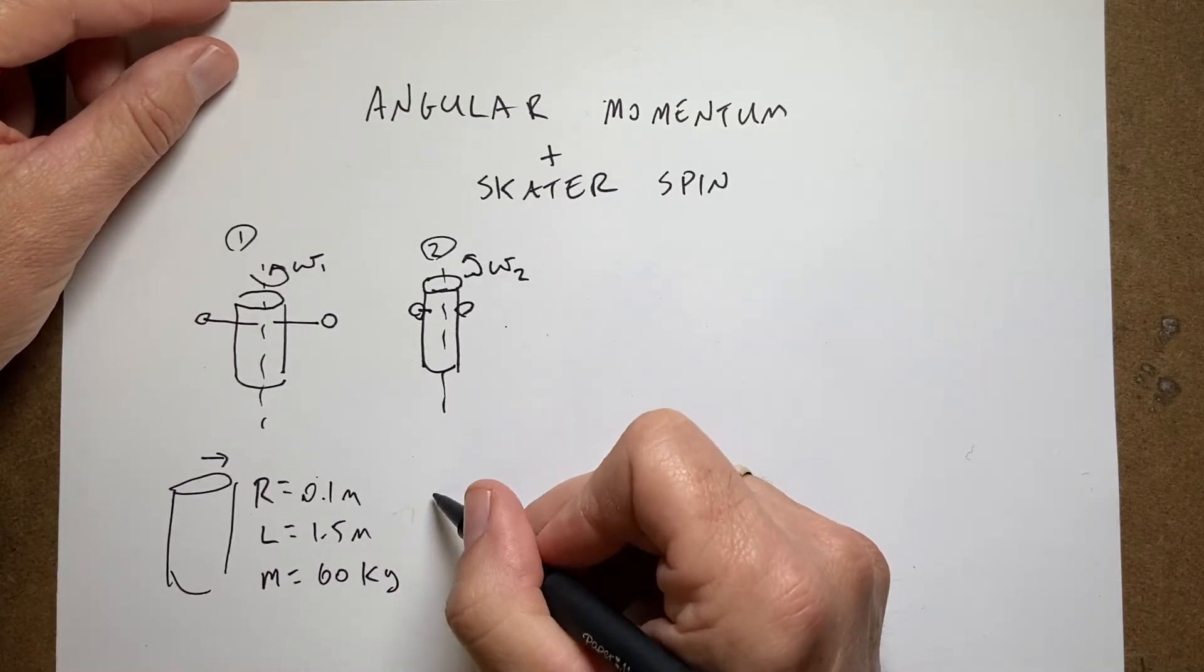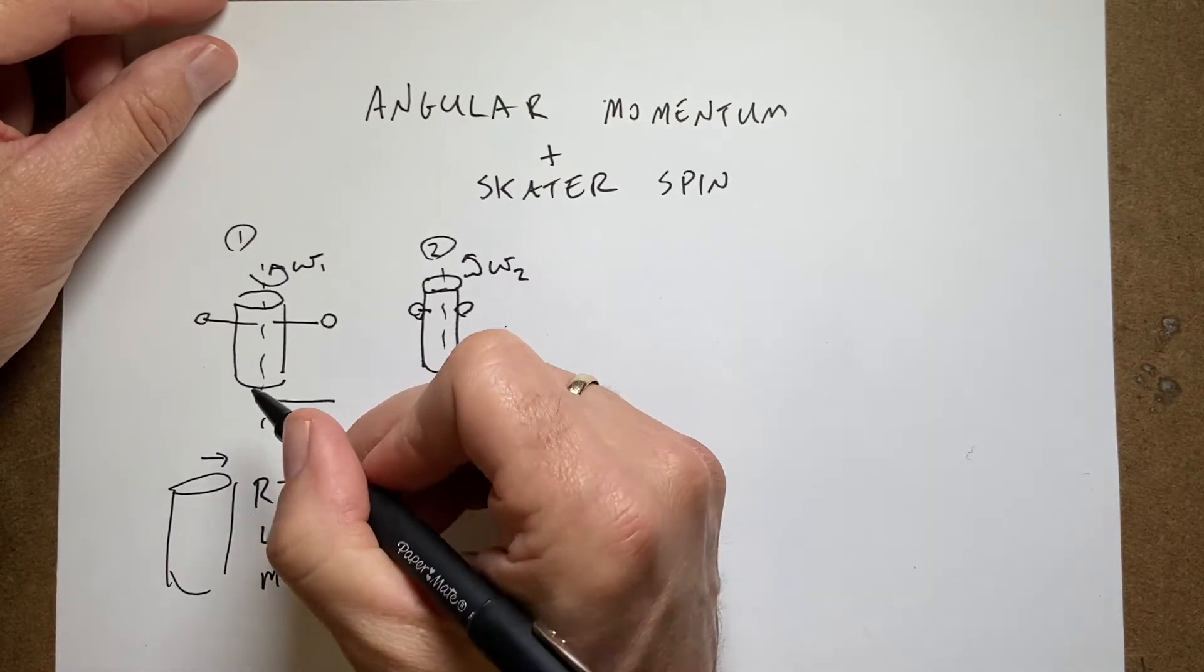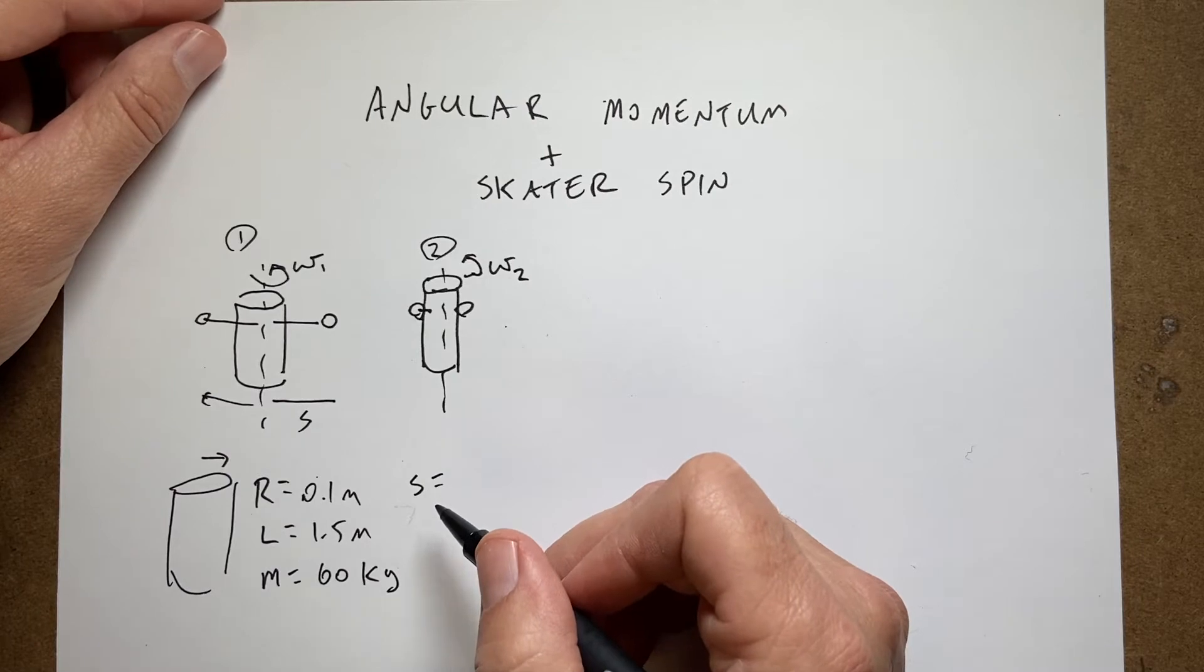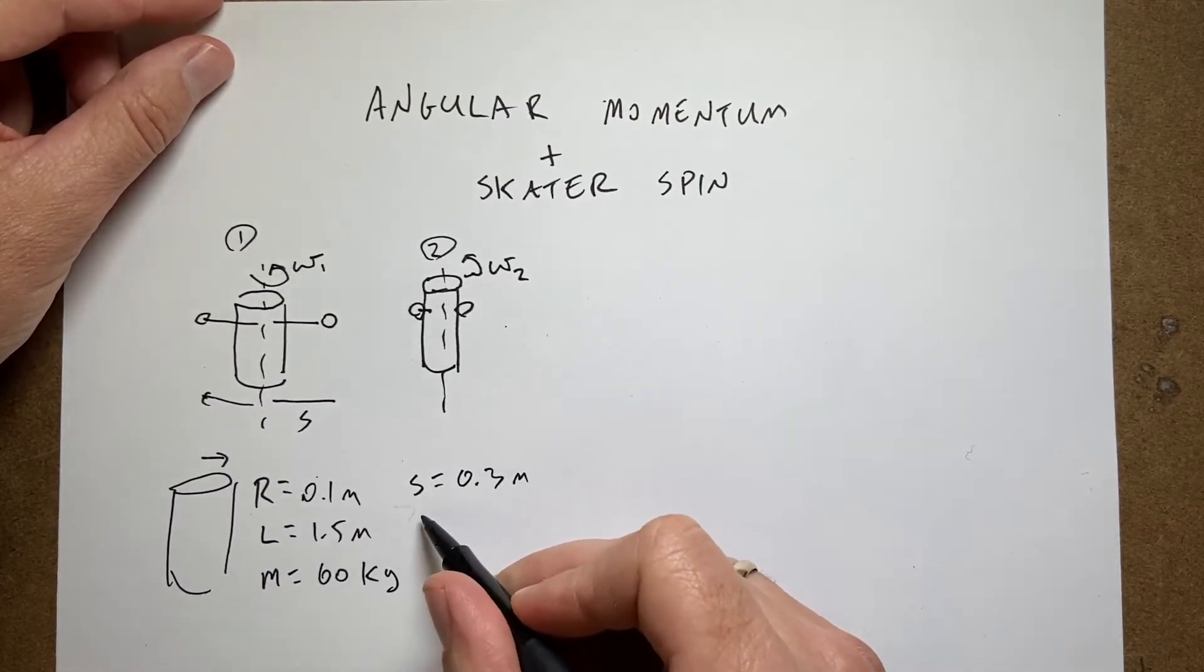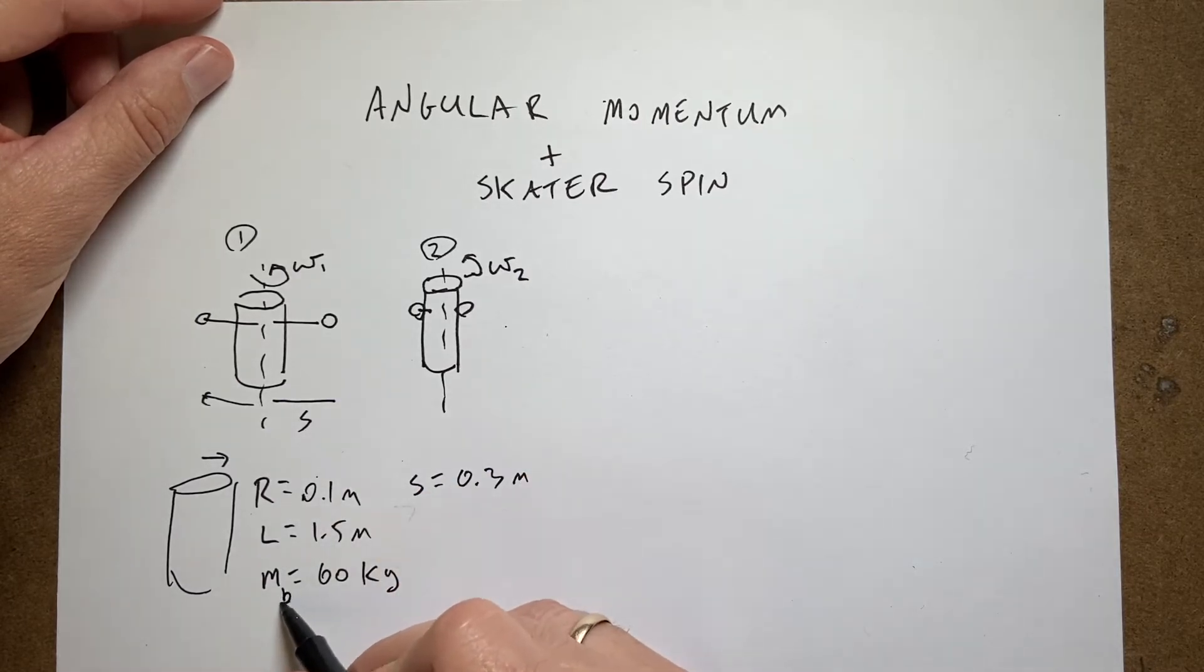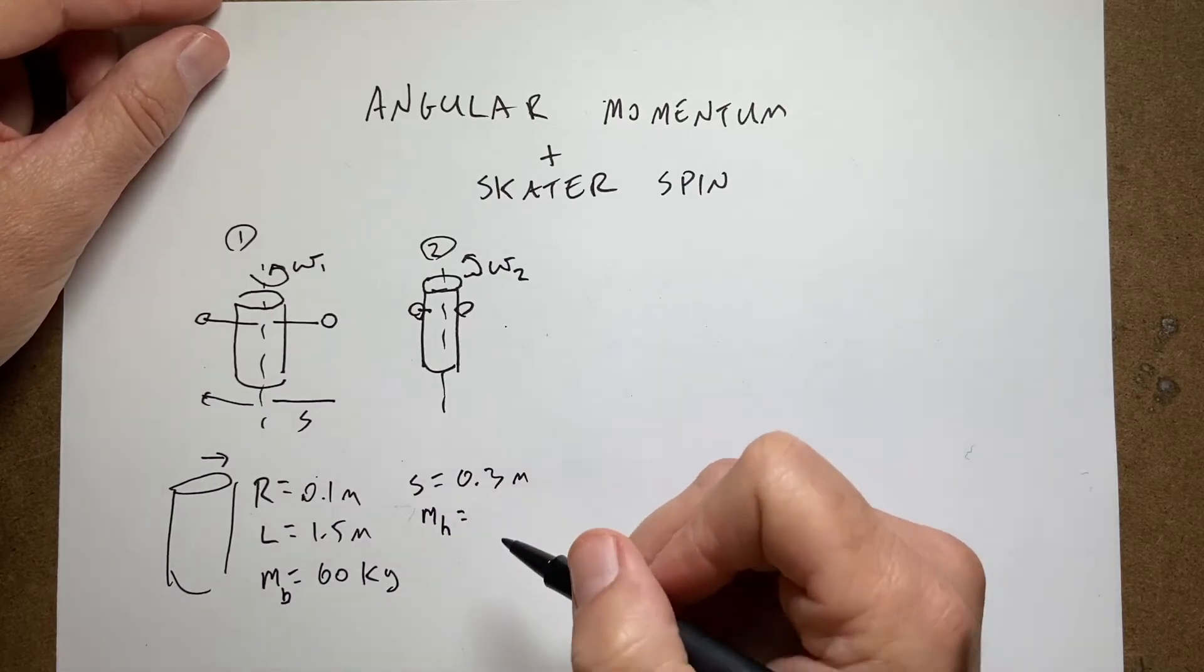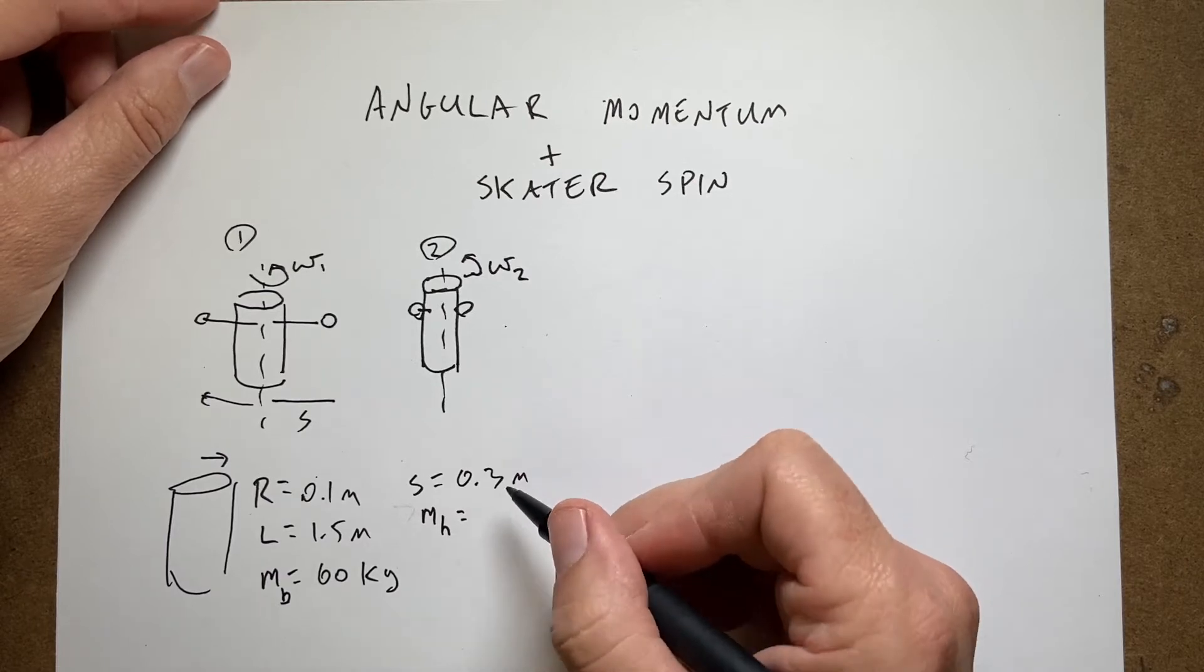And then I have the two hands and these hands we'll call this a distance s. So s is going to be equal to 0.3 meters and then mass, let's call this mb and m hand. Each hand has a mass of two kilograms.